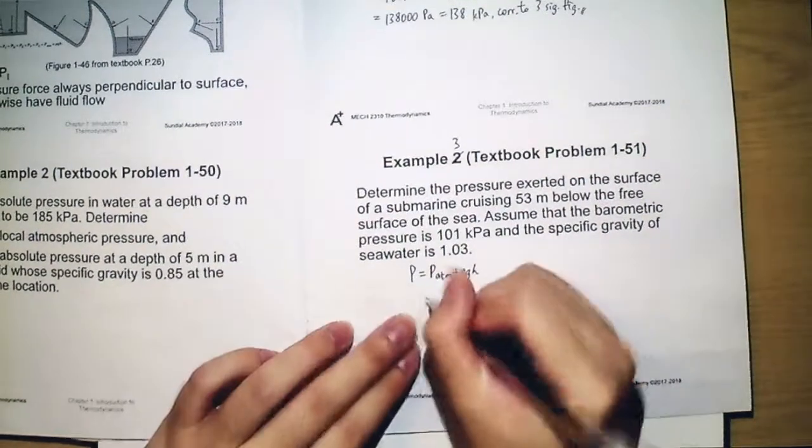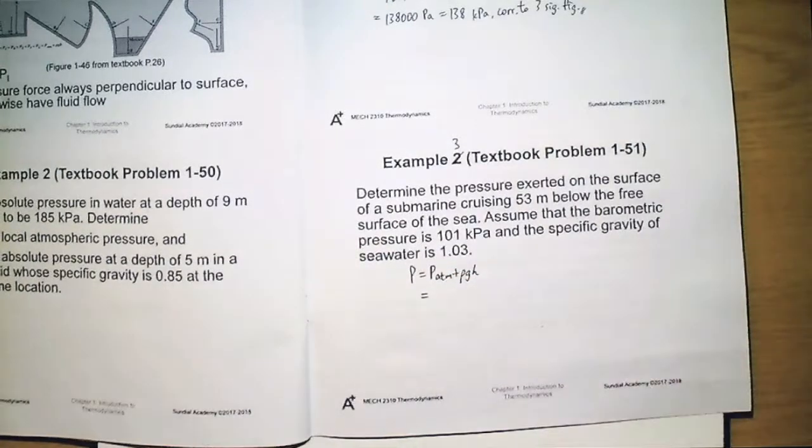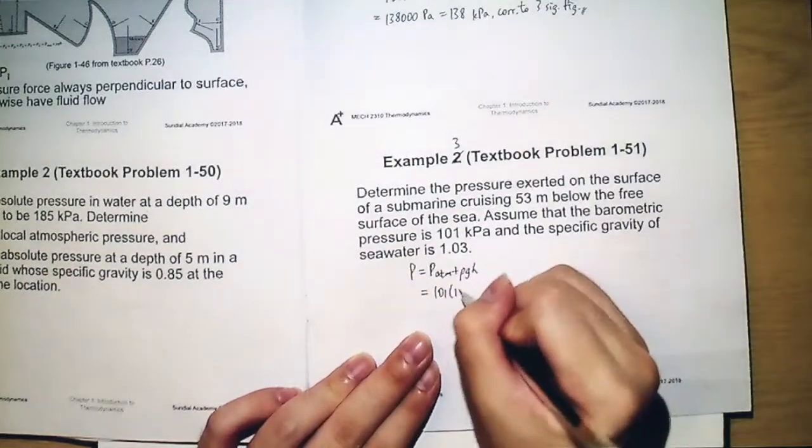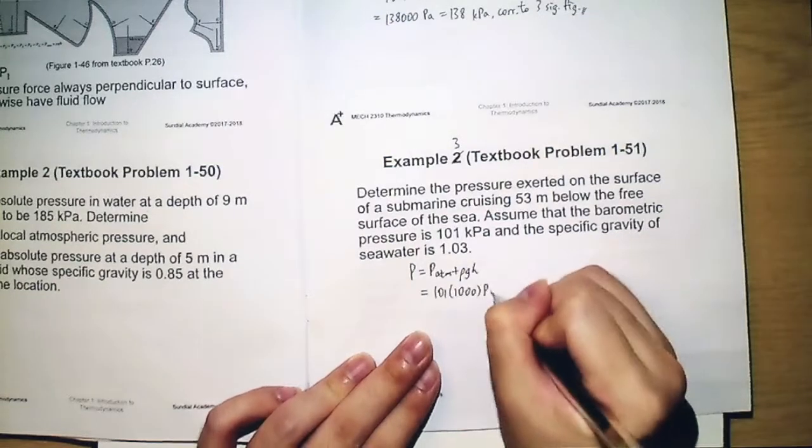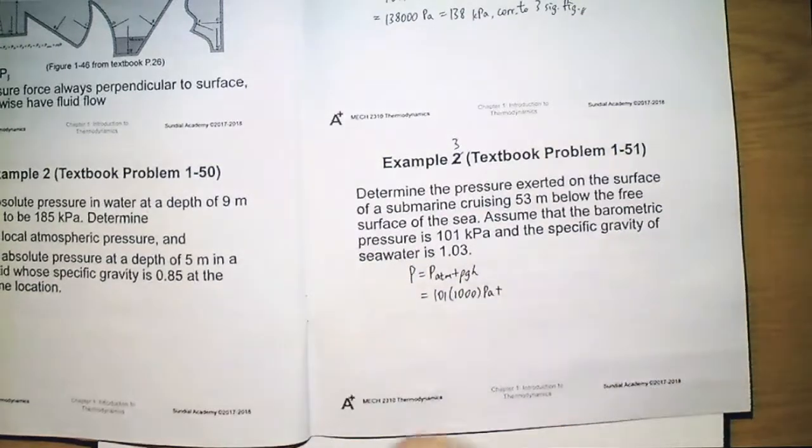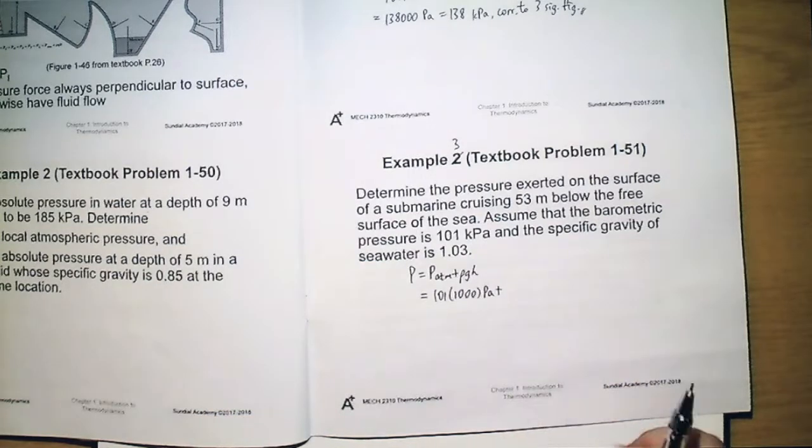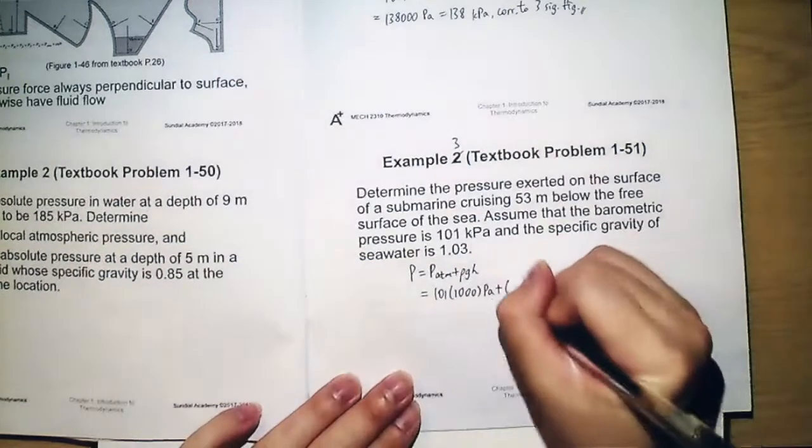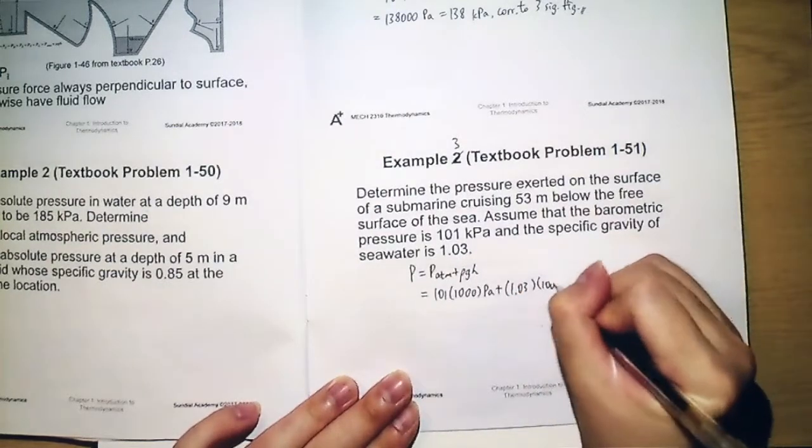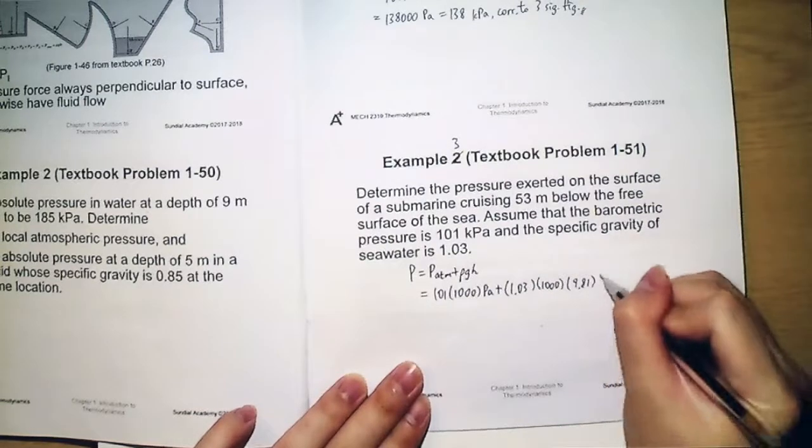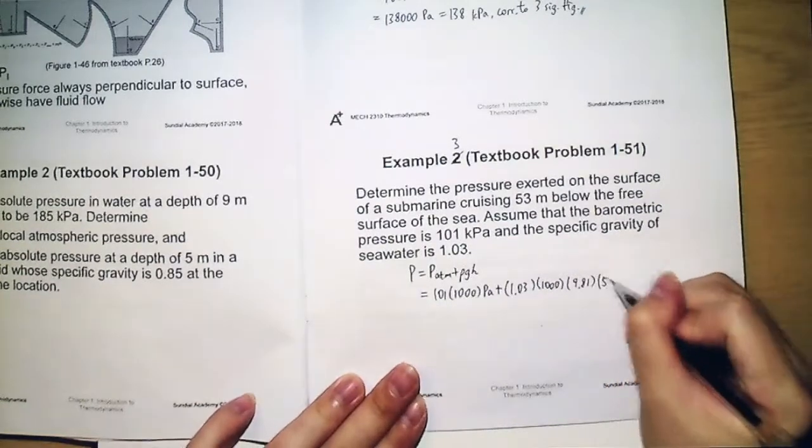And let us substitute some values, because as I've said that barometric pressure is just atmospheric pressure at that location. First, we change it to Pascal. Pascal plus, well, the specific gravity of seawater will be 1.03, so the density of seawater should be 1.03 times 1000. And then g will be 9.81, and then h will be 53.